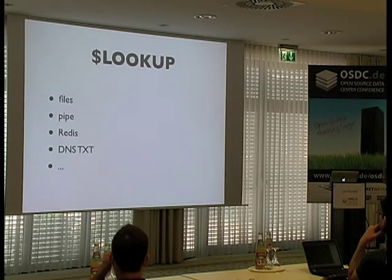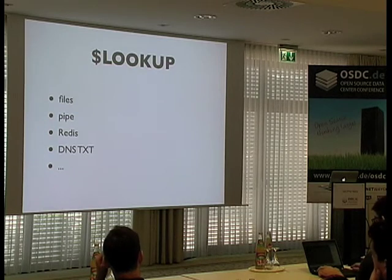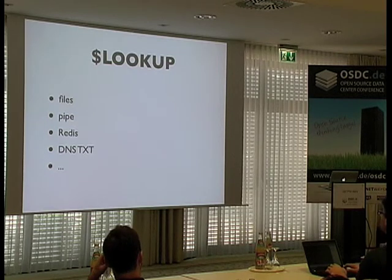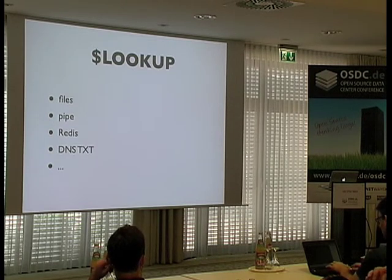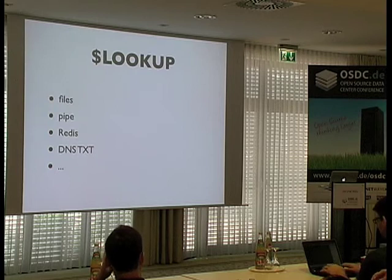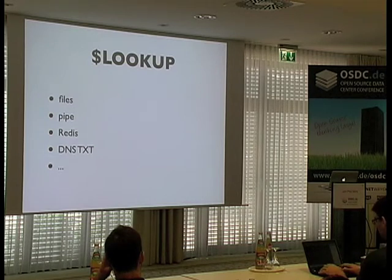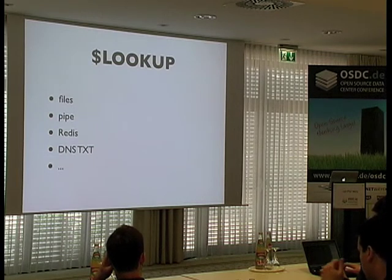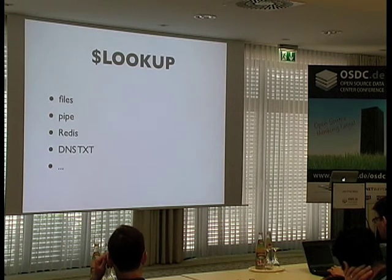Ansible supports lookup functions for doing all sorts of things — looking up text from plain files, obtaining text from a pipe, Redis lookups, and obtaining values from DNS text records. The result of a lookup function can be used in a template or playbook to branch and do different things. It's relatively easy to create lookup functions.